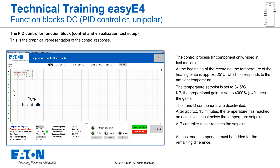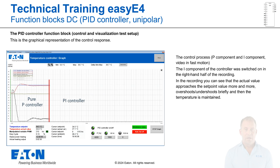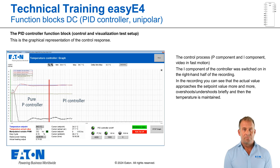At the beginning of the recording, the temperature of the heating plate is approximately 25 degrees Celsius, which corresponds to the ambient temperature. The temperature setpoint is set to 34.5 degrees Celsius. KP, the proportional amplification, is set to 4000%, which corresponds to a 40-fold amplification. The I and D components are deactivated. After approximately 15 minutes, the temperature has reached an actual value just below the temperature setpoint. A pure P controller never reaches the setpoint, which is why at least one I section must be added for the remaining difference. The I section of the controller was switched on in the right-hand half of the recording. You can see that the actual value continues to approach the setpoint, overshoots, undershoots briefly, and then the setpoint temperature is maintained. The parameters were determined empirically, and applied to this specific operating point. Other operating points require an adjustment of the control parameters, and the parameters of more complex controlled systems must be calculated and/or determined using simulations.